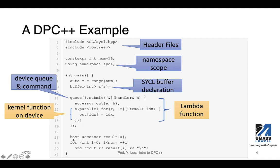The next few lines access the result, which is another accessor used by the host to access the values in buffer A. The last two lines are a for loop where we use this accessor 'result' to access the content in buffer A and print it out. That's all for this simple DPC++ example, where we see all the necessary components: header definitions, namespace, ranges and buffer declarations, command queue, command, and kernel functions.